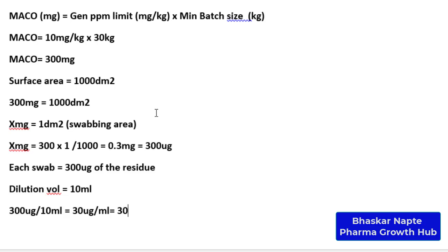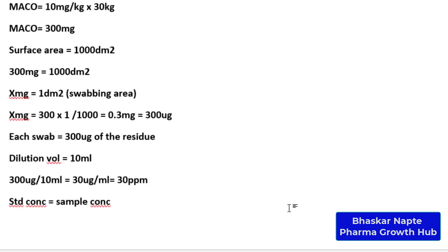That is 30 microgram per mL, or roughly 30 ppm — assuming the density of your diluent is 1. So the sample concentration is 30 ppm, even though the general ppm limit is 10 ppm. We began the discussion with a general ppm limit of 10 ppm but ended up with a sample concentration of 30 ppm, because we must consider the minimum batch size and the surface area in the calculation. Your standard concentration should equal the sample concentration — so you also need to make a standard solution of 30 ppm.